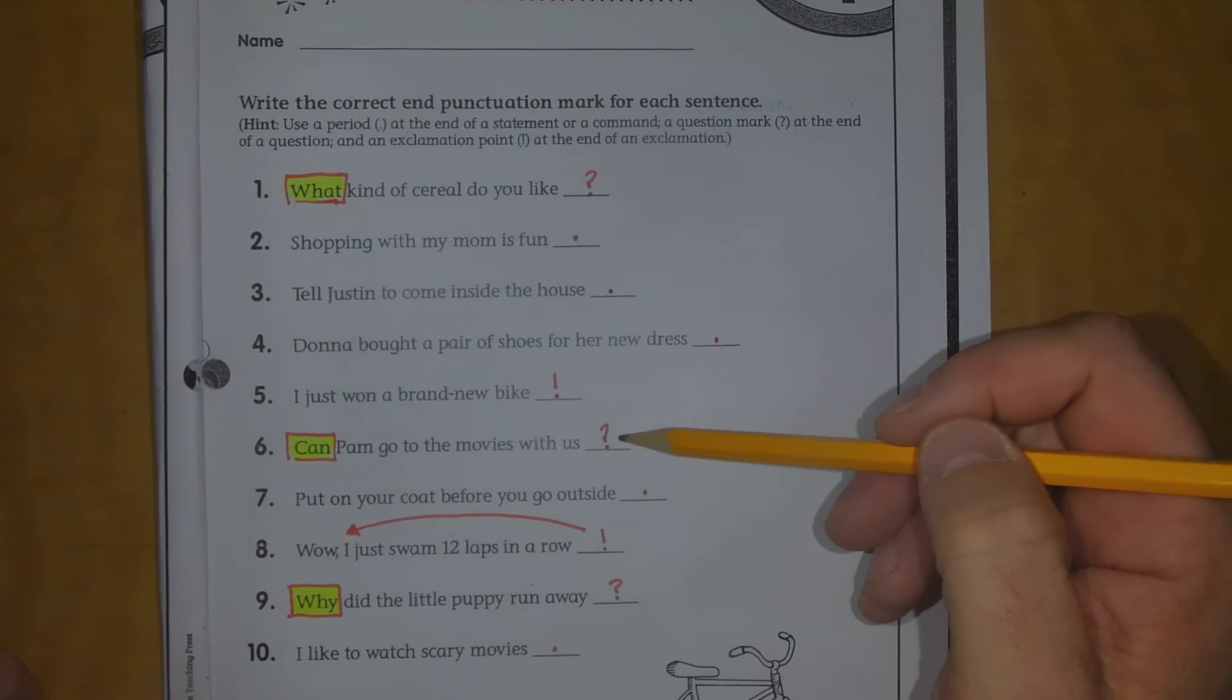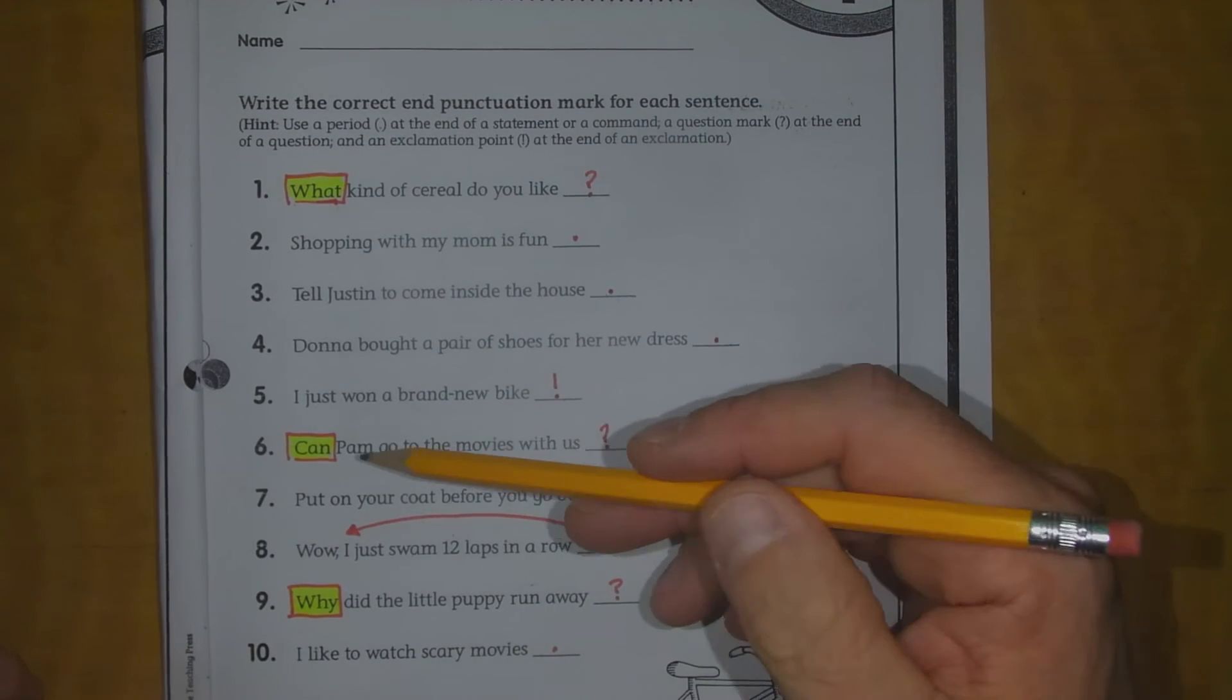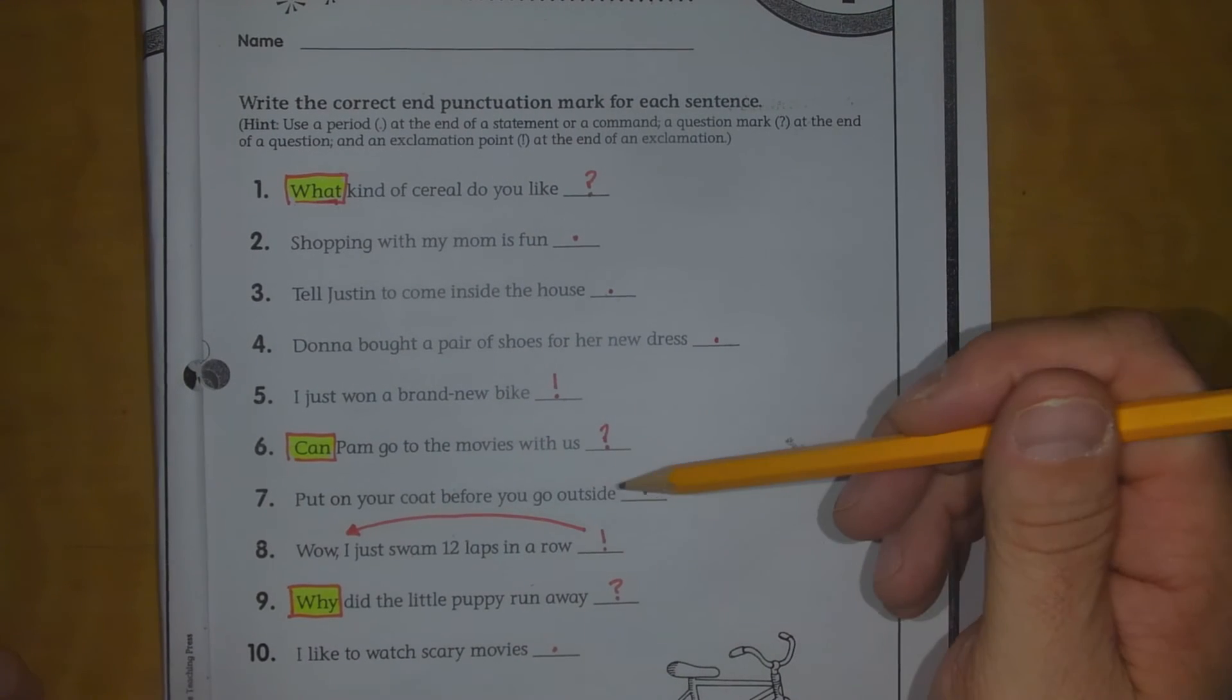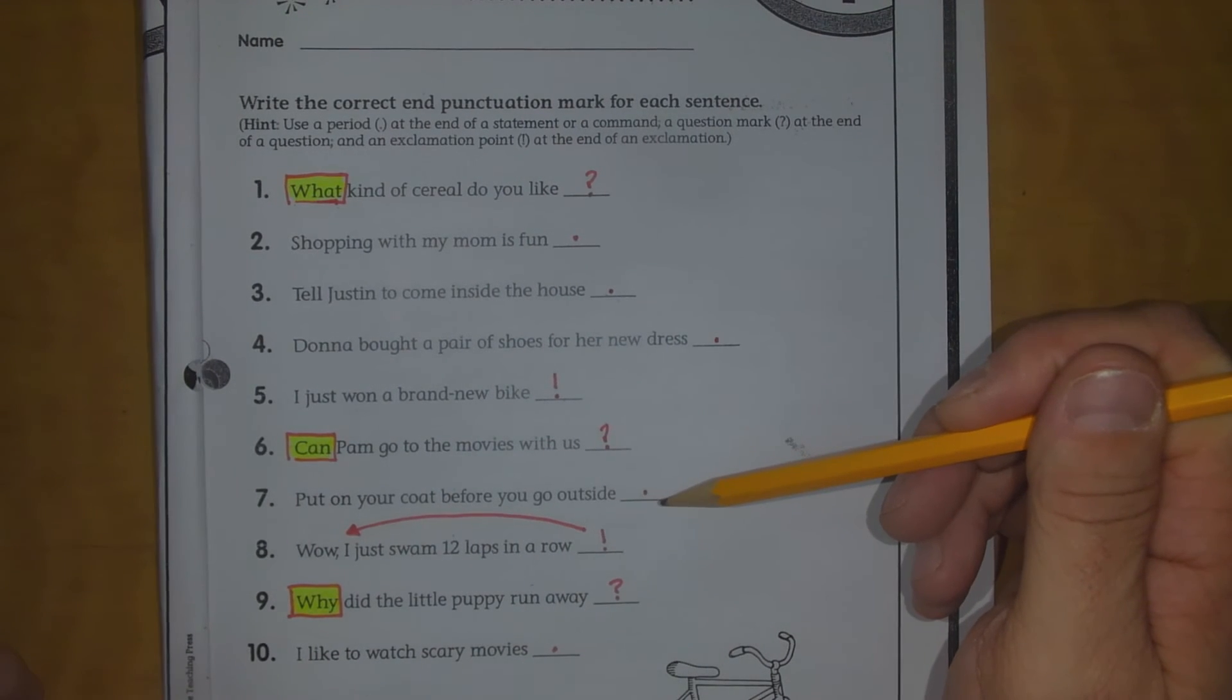Can Pam go to the movies with us is a question. That question word is at the beginning, can. Put on your coat before you go outside is a command.